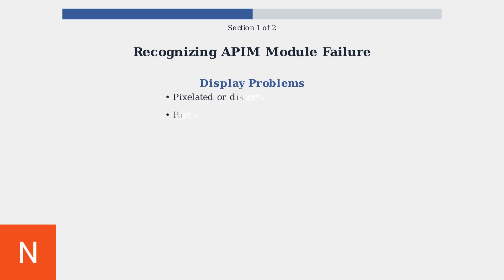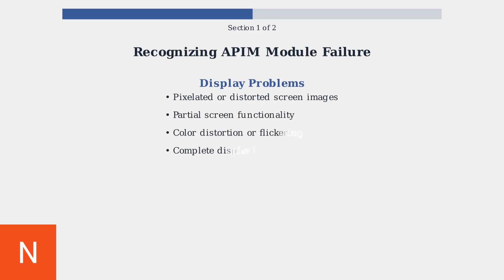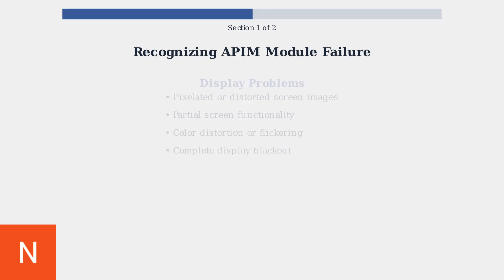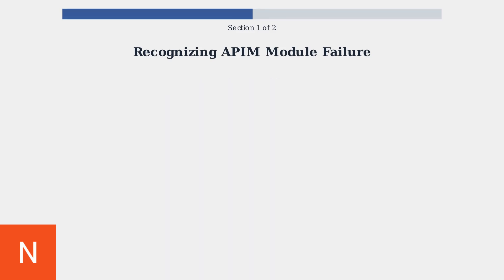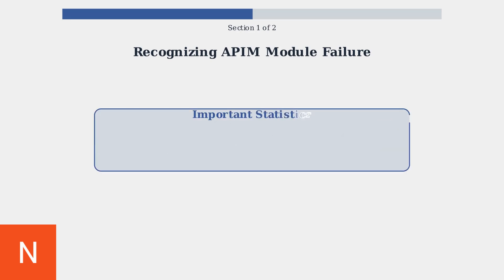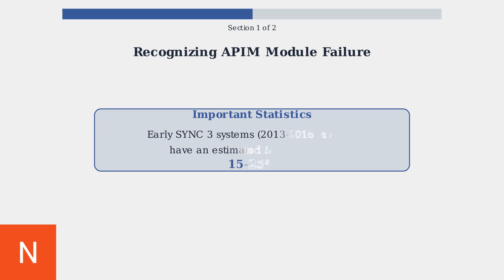Display problems are often the most visible signs of APIM failure. These include pixelated or distorted images, partial screen functionality, color distortion, flickering, or complete display blackouts.